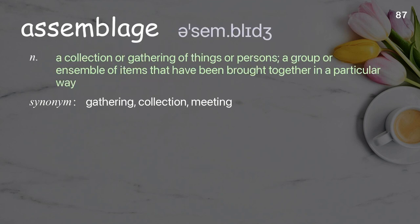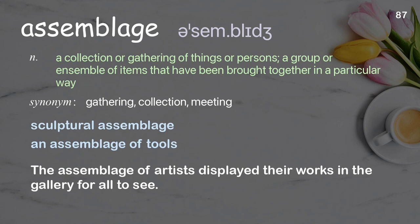Assemblage: A collection or gathering of things or persons; a group or ensemble of items that have been brought together in a particular way. Examples: Sculptural assemblage. An assemblage of tools. The assemblage of artists displayed their works in the gallery for all to see.